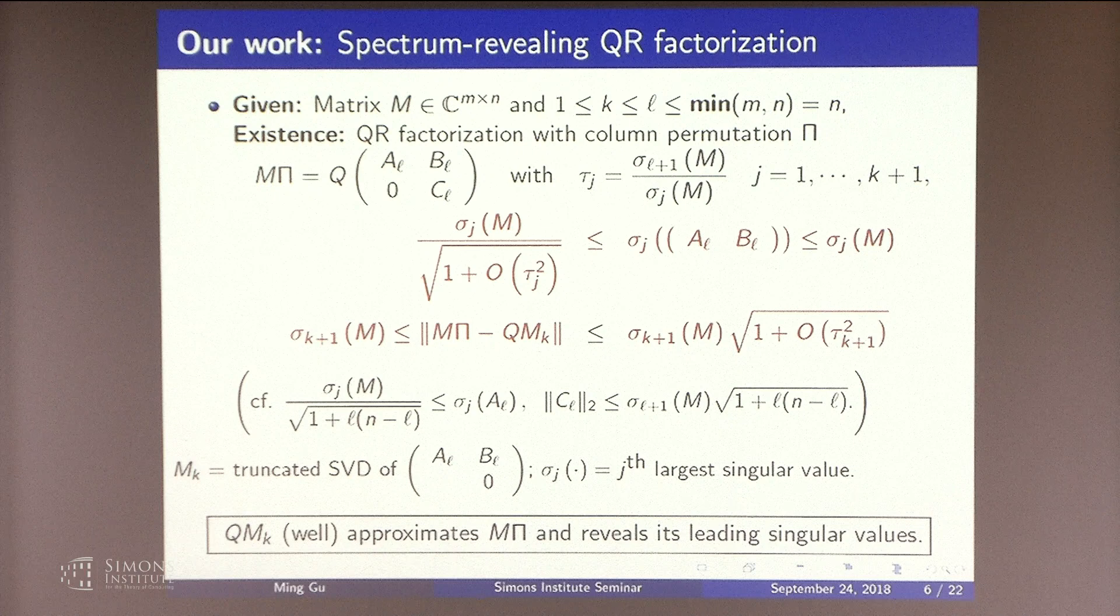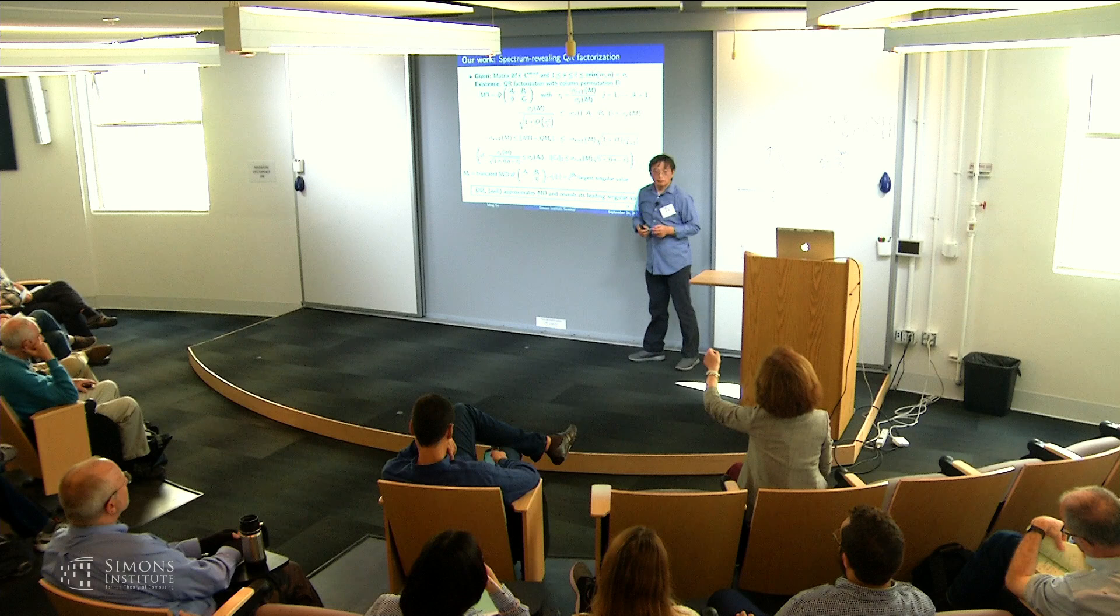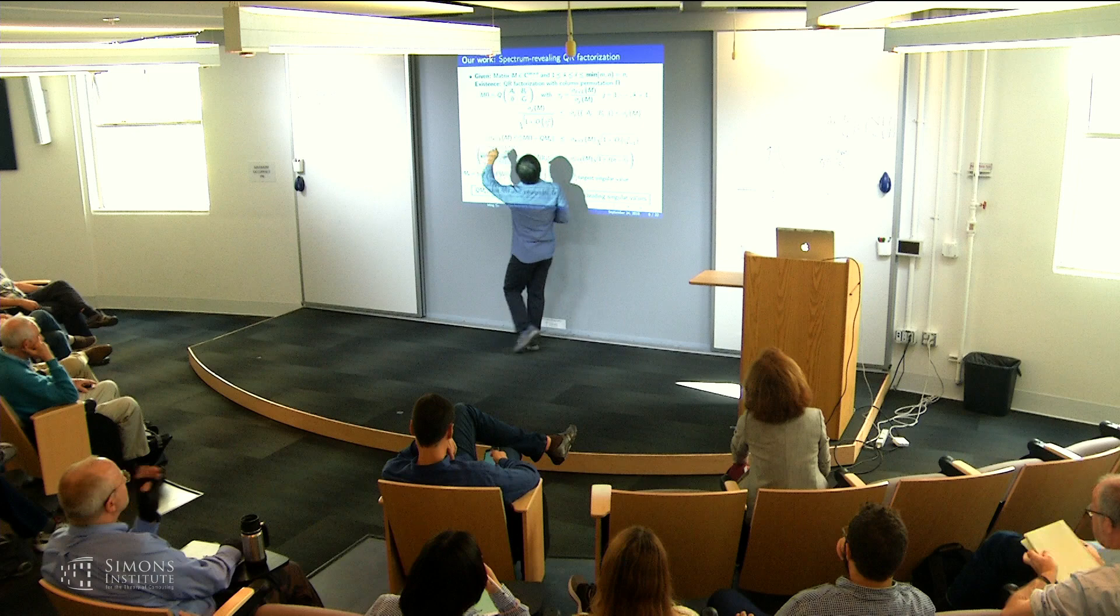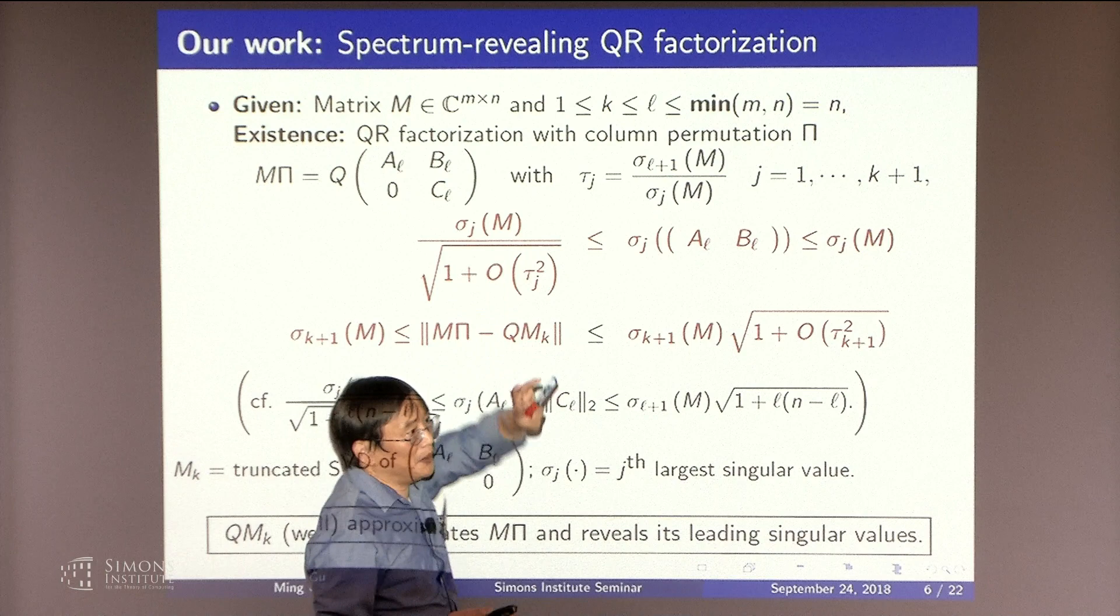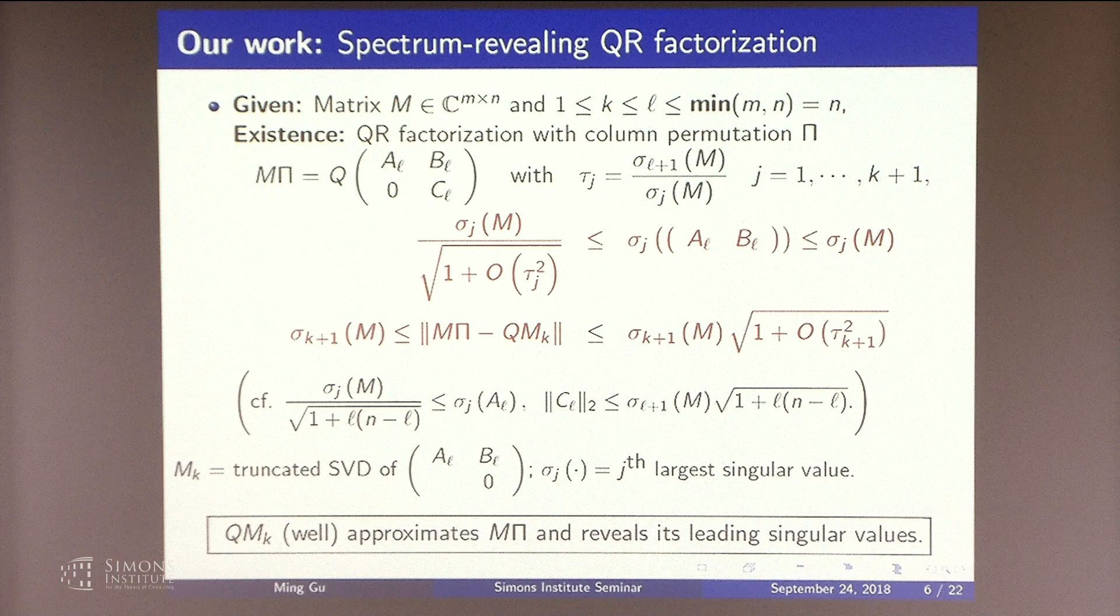Excuse me, could you give the intuition for why you keep the B around? Because your low rank approximation is going to be linear combinations of the first L columns of Q, right? So what does the B have? If you only look at A, that's only just the A, that's only L columns of matrix. The B actually represents the linear combination of the remaining columns in the leading columns.